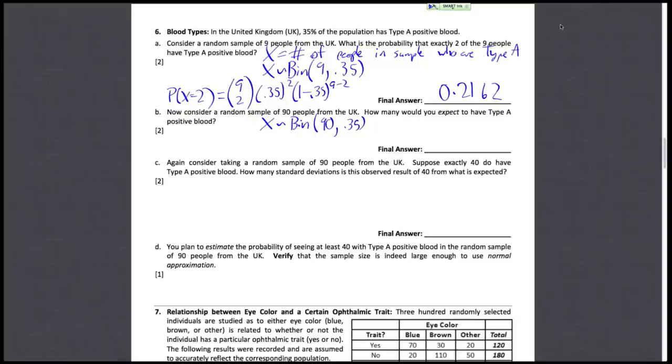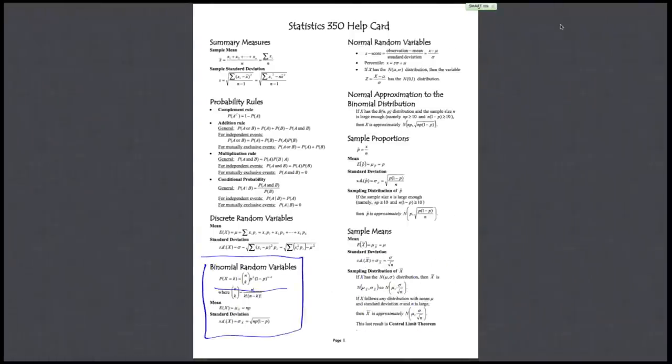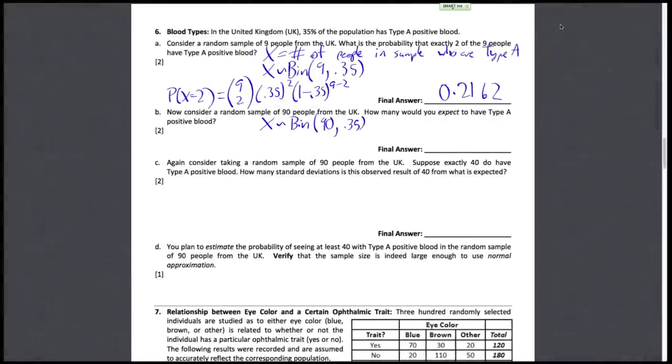Alright. So let's go ahead and go back to the formula card. And it gives us here the mean or expected value as just N times P. So back here, the expected value of the number of people who have type A blood is equal to N, 90, times P, 0.35, and that is equal to 31.5.